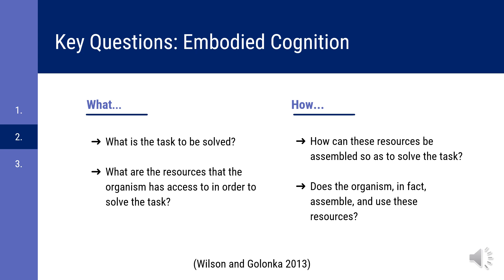A few examples of the big questions asked in embodiment stem from the theory of embodied cognition. One: what is the task to be solved? Two: what are the resources that the organism has access to in order to solve the task? Three: how can these resources be assembled so as to solve the task? Four: does the organism in fact assemble and use these resources?